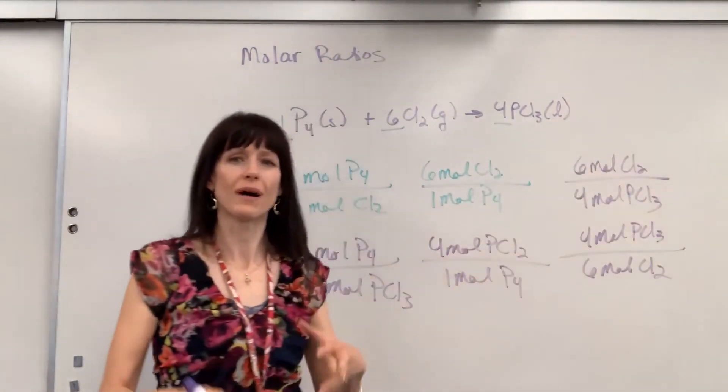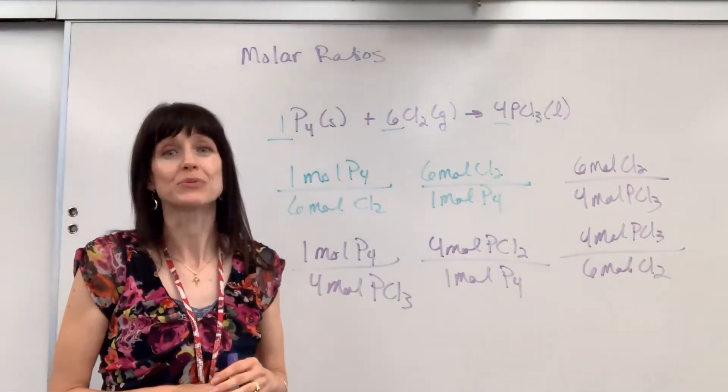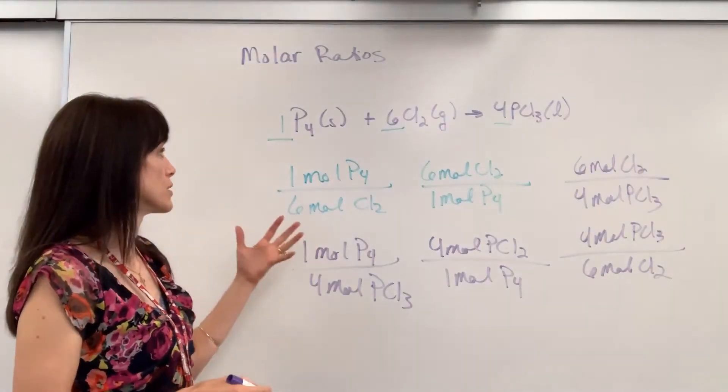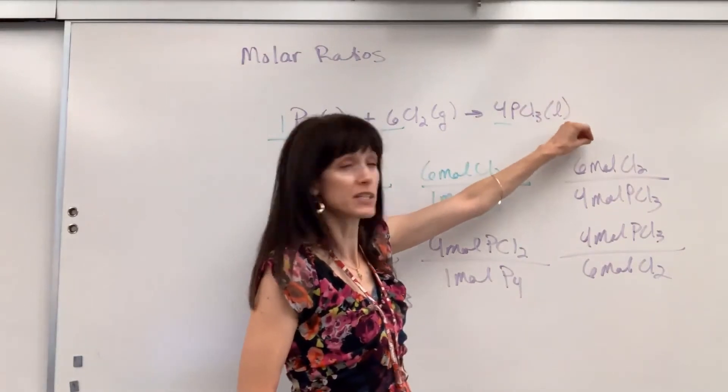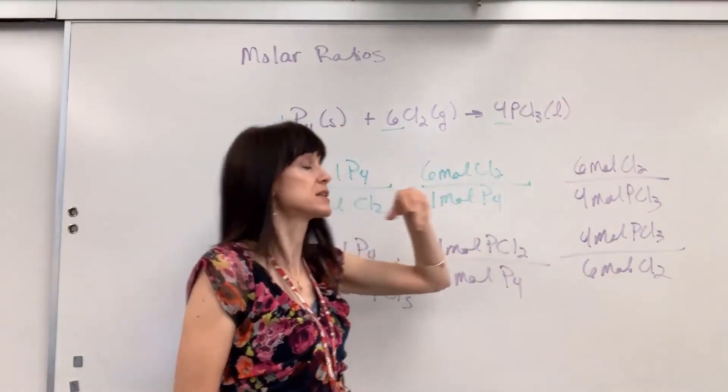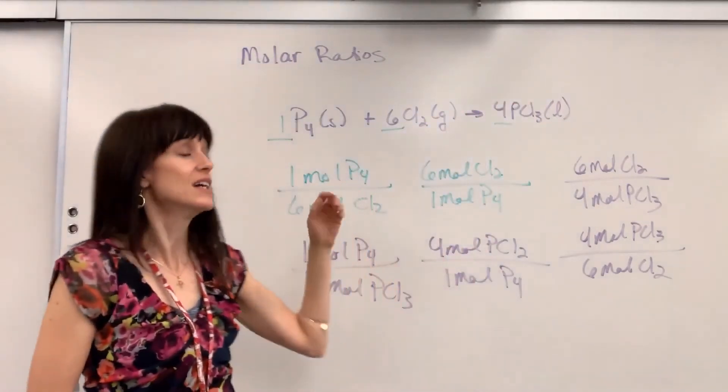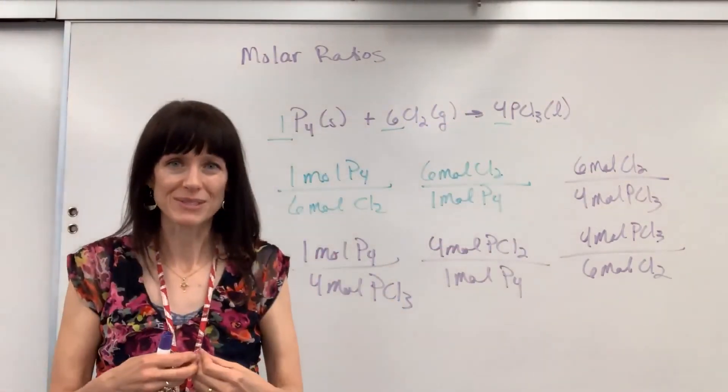Now it's pretty rare that you will actually write just a molar ratio, but this is going to be crucial when we start stoichiometry. So there are molar ratios. You can compare any set of reactants to one another, any set of products to one another, if I had another product, and you can compare reactants to products, products to reactants, because those molar coefficients are ratios. Thank you.